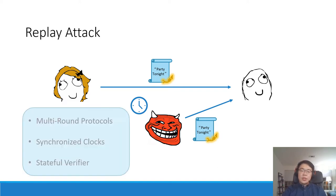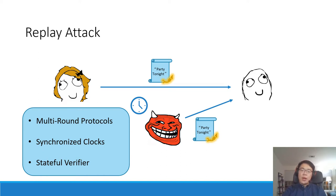To prevent against replay attacks, we would either need to make the protocol multiple rounds, requiring interaction between the two parties, or require Alice and Bob to maintain a synchronized clock, or require Bob — the verifier — to maintain a state. Again, all three of these could be undesirable in many cases.